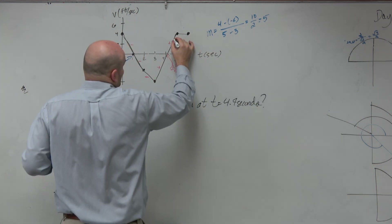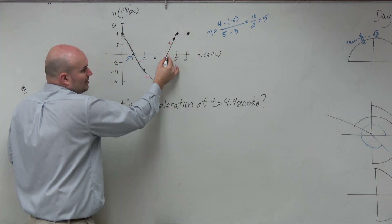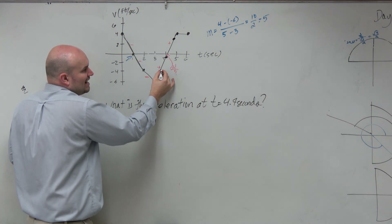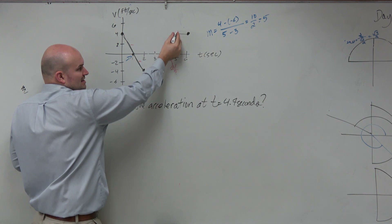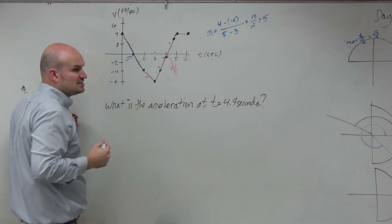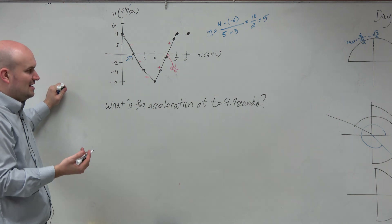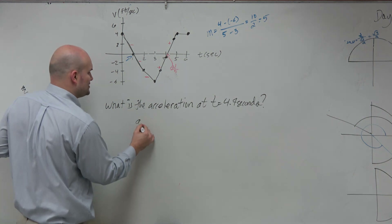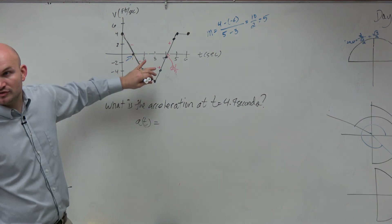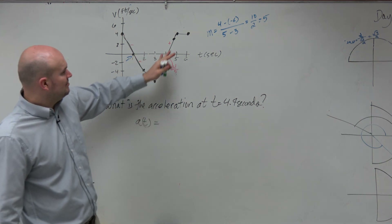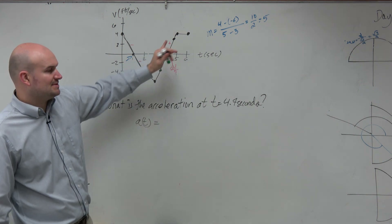Now 4.7 is probably somewhere right there. It doesn't matter if it's at 4 or at 3.5 — they all lie on the same line. They're all changing at that constant rate because this velocity is linear. So the rate of change is going to be exactly the same. To find the acceleration, all we need to do is find the change in velocity over the change in time between any two given points, and that will be the same as at 4.7.